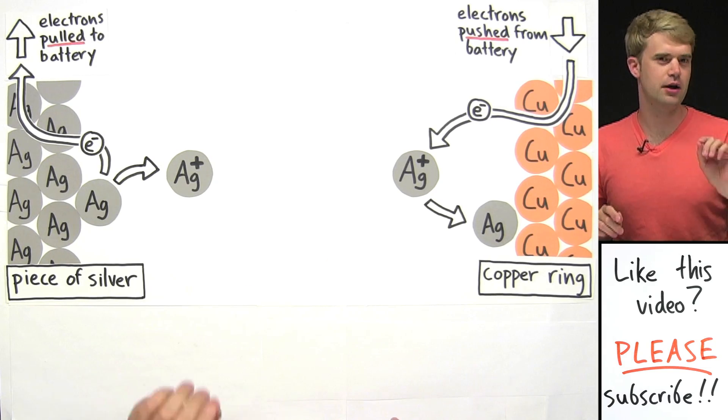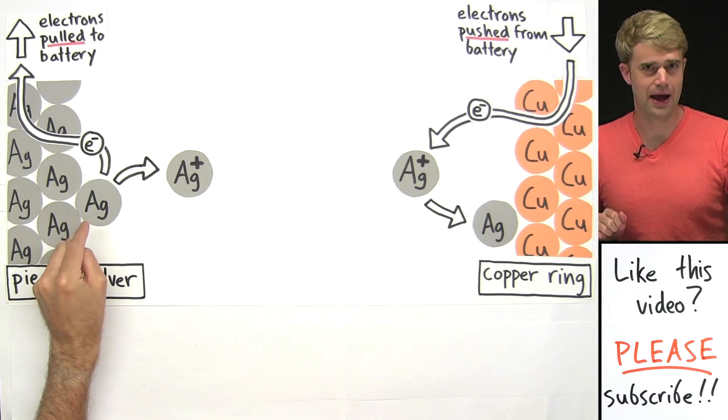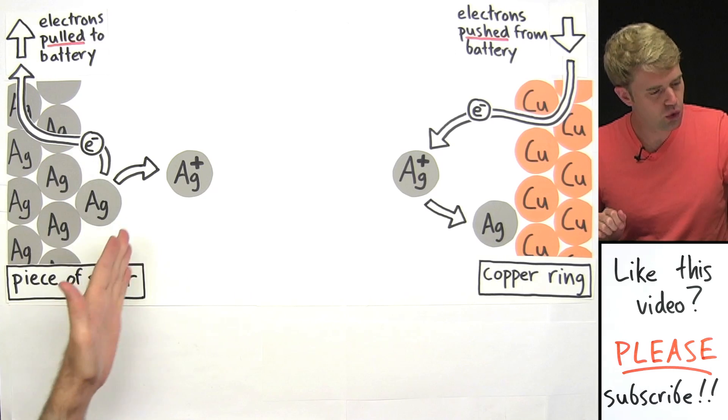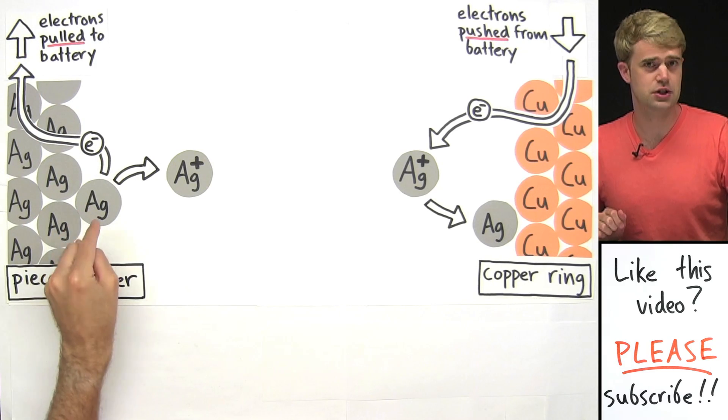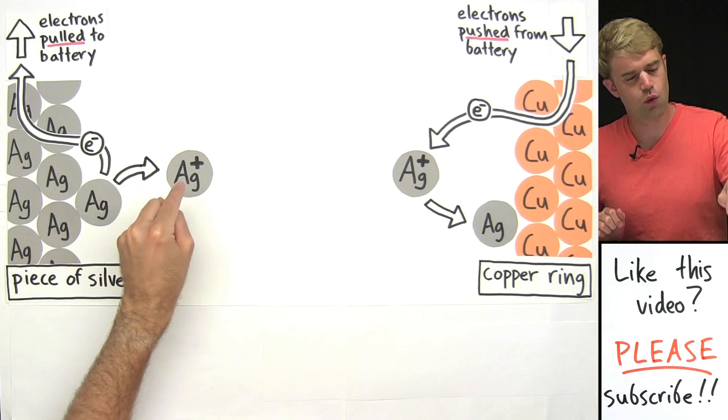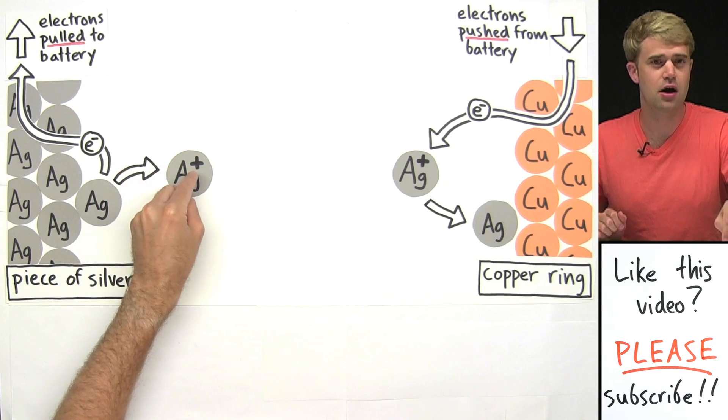So this is what I'm trying to show. Here a neutral silver atom loses one of its electrons that's pulled towards the battery. This turns the neutral silver atom into a silver one-plus ion, and it comes off the surface of the metal, dissolving in the solution.